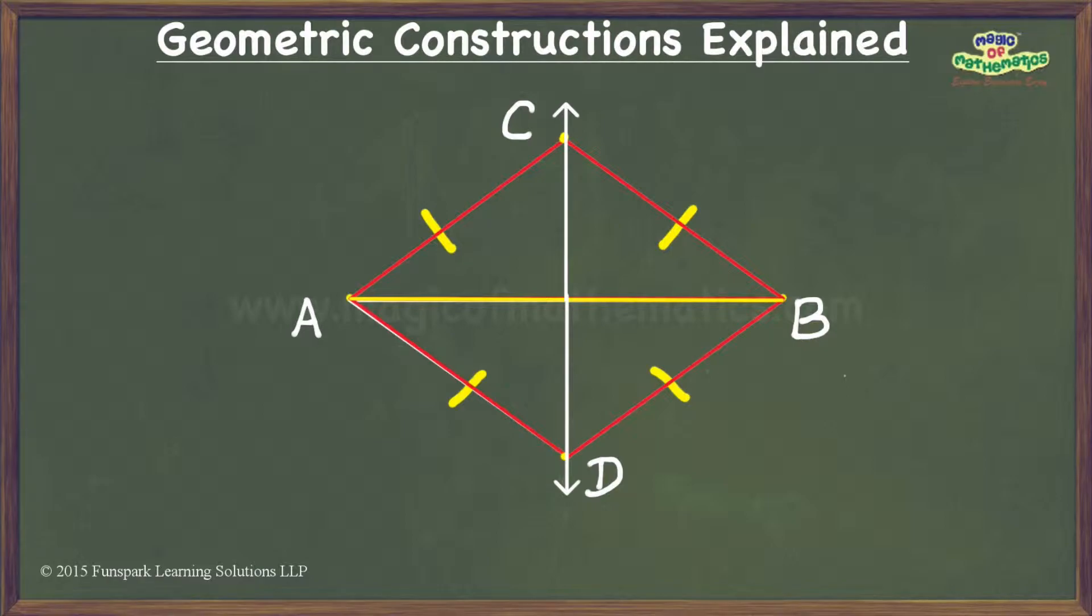What is worth noting here is that we don't actually need to draw the sides of our two isosceles triangles. All we need to do is to identify the remaining vertices of these two triangles.